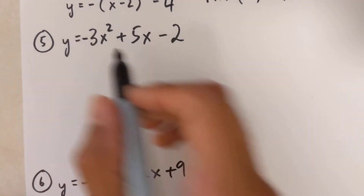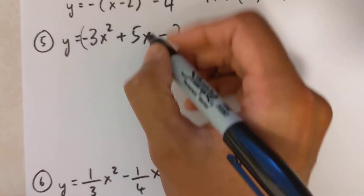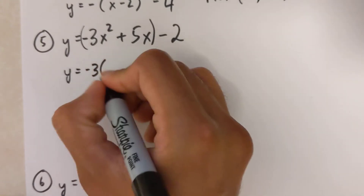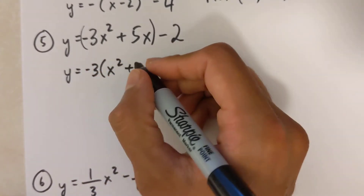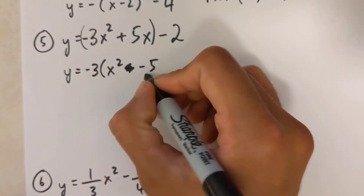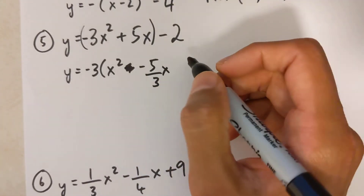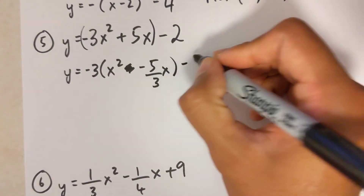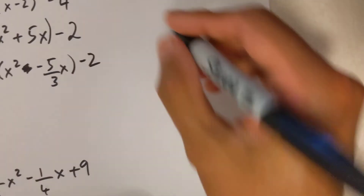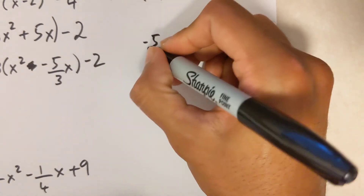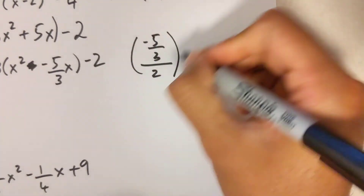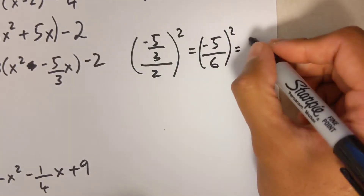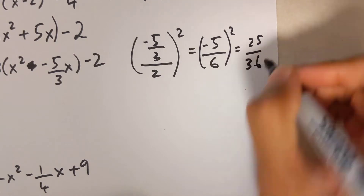For the fifth example with a negative 3 a value, I factor out negative 3 first. So y equals negative 3 times x-squared minus 5 over 3 x, minus 2 outside. I always recommend fractions over decimals for accuracy. Writing negative 5 over 3 on the side: divide by 2 gives negative 5 over 6, squared gives 25 over 36.